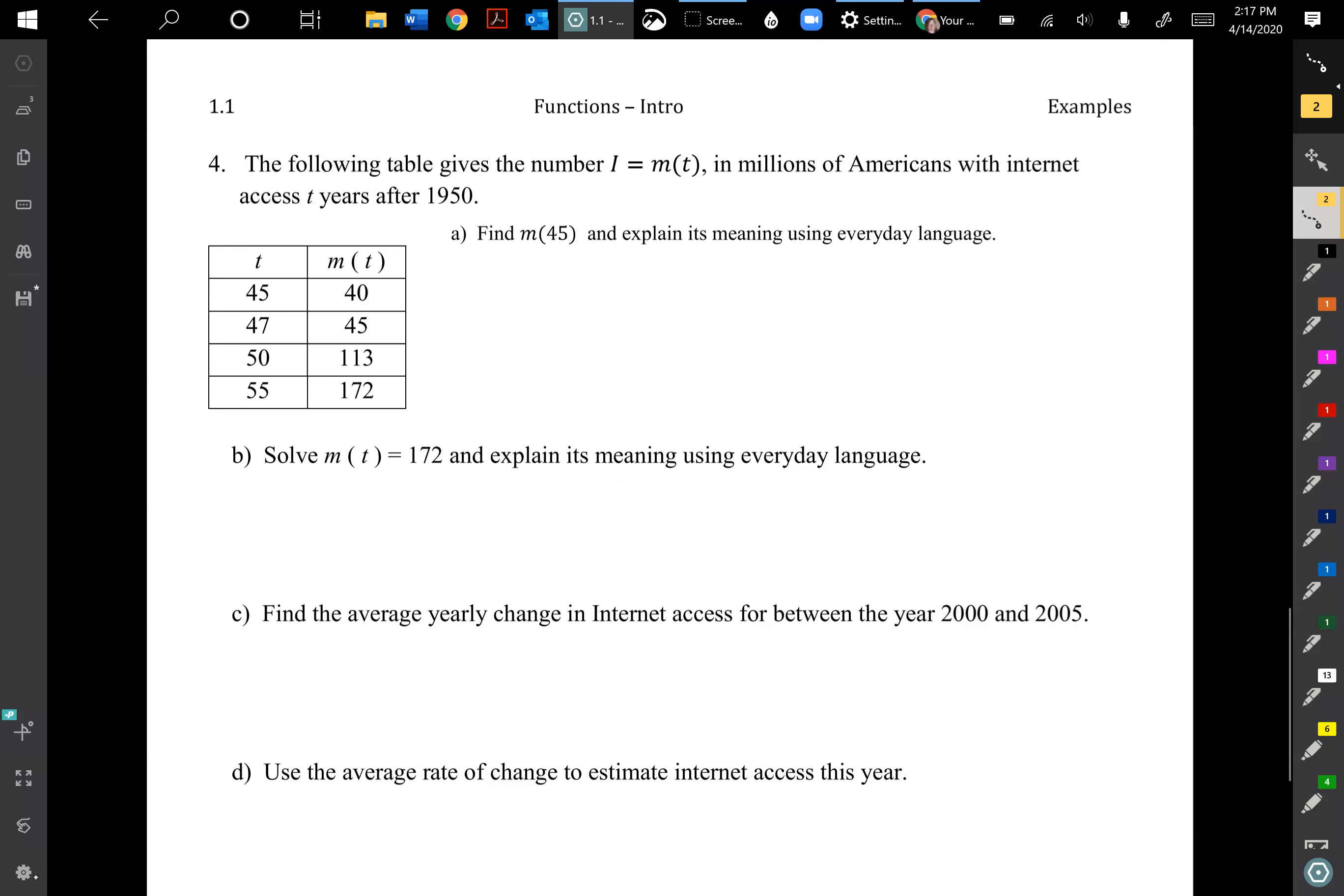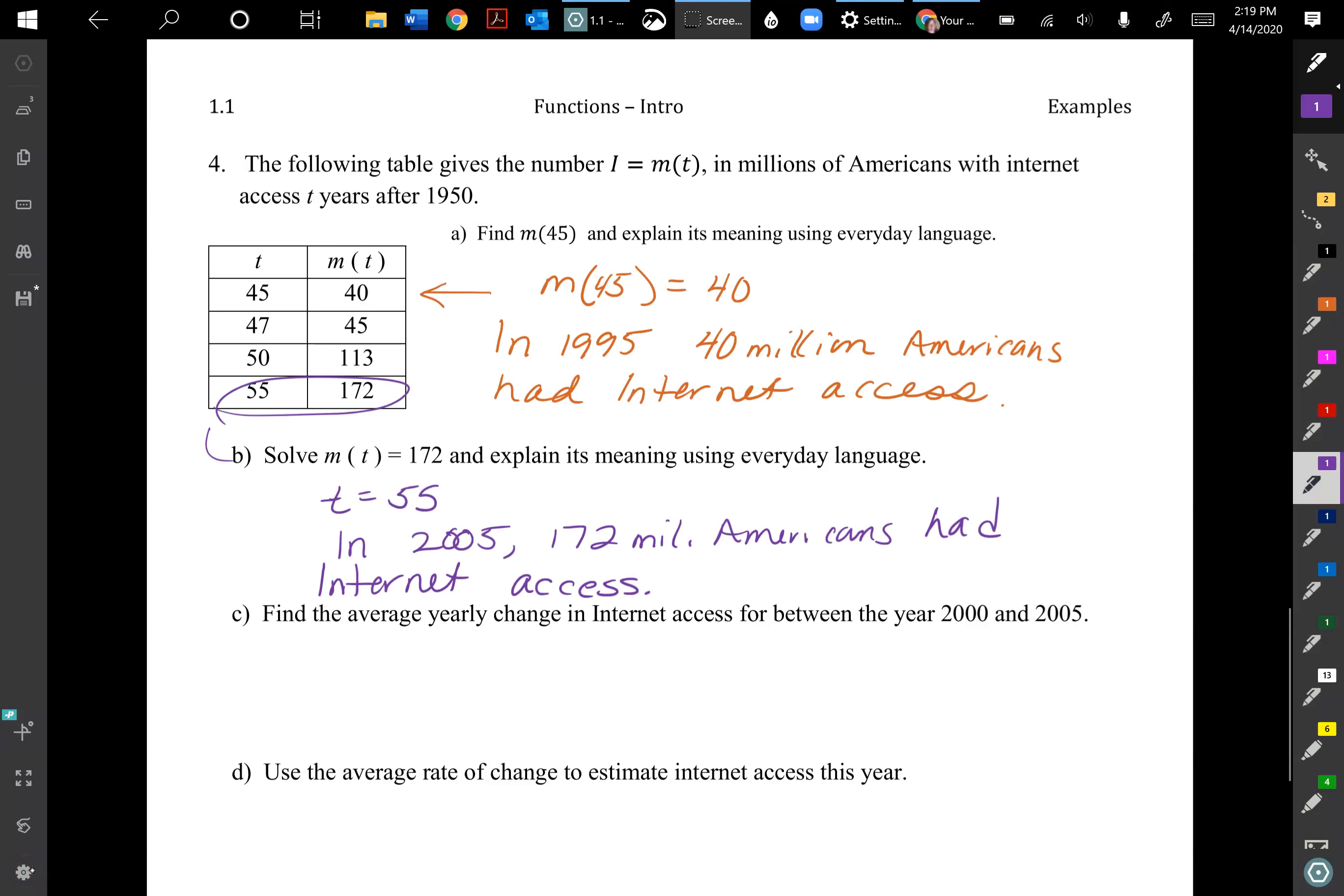Okay, so for part a of number four, we have m(45) = 40. I just found the 45 where t was equal to 45 and looked over in the right-hand column and found 40. I'm making sure that is m(t). Then I add 45 on to my base year 1950, so I have in 1995, 40 million Americans had internet access.